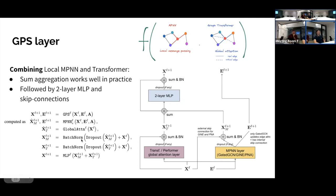On normalization: we tried layer norm, graph norm, and other norms. Batch norm worked better, which aligns with observations from Vijay and others that batch norm works better for graph transformer approaches. We also note that a small but significant difference from models like GraphTrans is that we combine MPNN and transformer in one layer, applying only one MPNN layer at a time, avoiding the over-smoothing and over-squashing that can occur in architectures that first stack multiple MPNN layers before applying transformer layers.